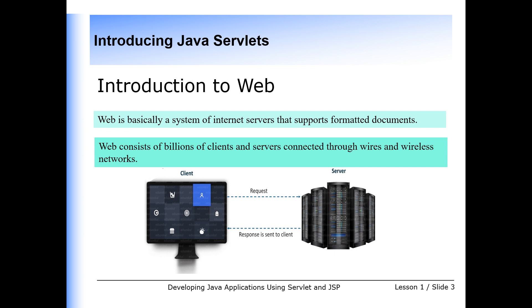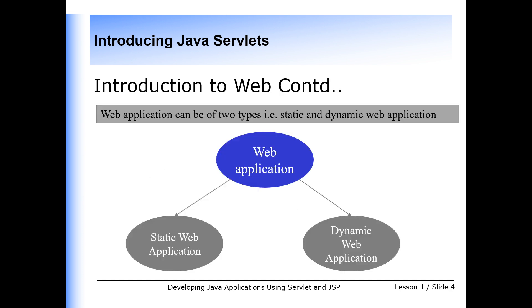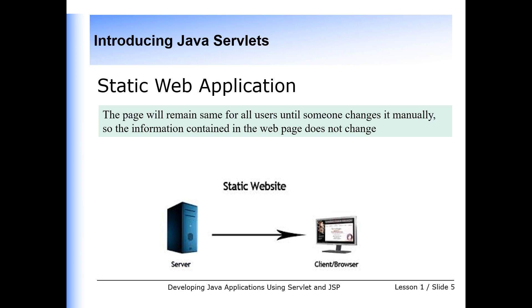Now let us understand what is the difference between static and dynamic web applications. A web application can be of two types: static web application and dynamic web application. A static web application is the basic type of website that is very easy to create — you do not need knowledge of web programming or database design to create a static website. In a static web application, the page will remain the same for all users until someone changes it manually.